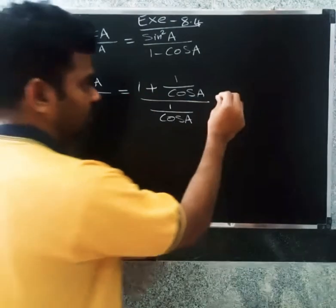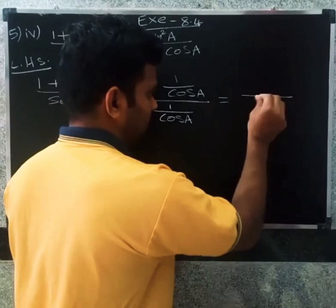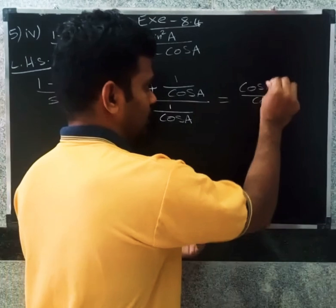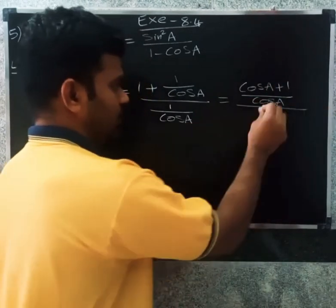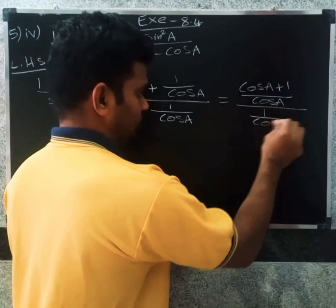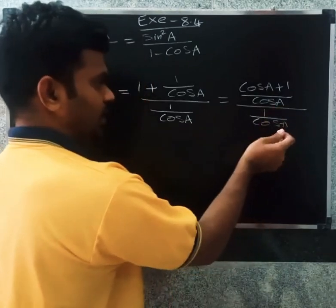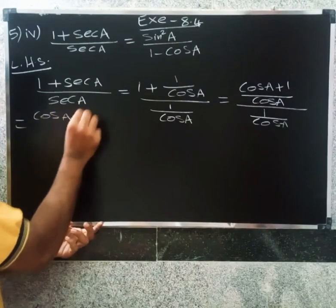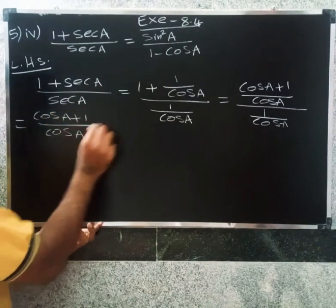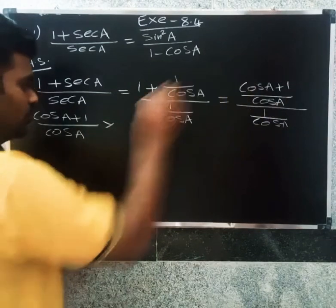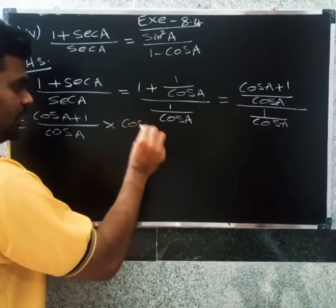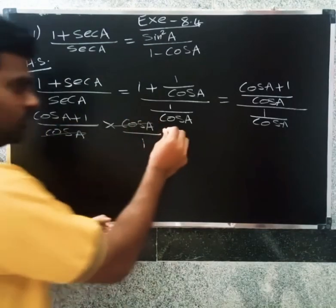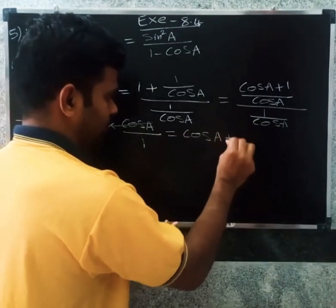We update the numerator and denominator: cos A plus 1 divided by cos A, multiplied by the inverse. Rearranging, we get cos A plus 1, which equals 1 plus cos A. So LHS simplifies to 1 plus cos A.